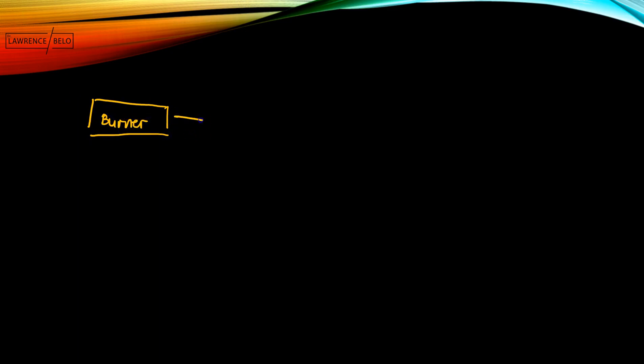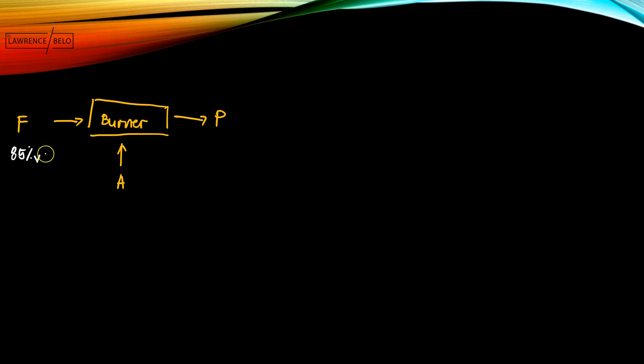Let's first draw the process flow diagram for the system. We have the burner, with product gases coming out, and fuel and air entering. The fuel consists of 85% by volume of isooctane, C8H18. That means the remaining 15% by volume would be heptane, C7H16.